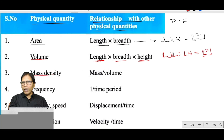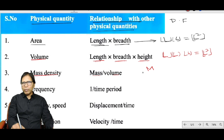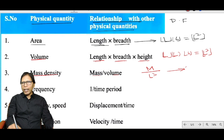Mass density equals mass divided by volume. The dimension of mass is M and the dimension of volume is L³. Therefore, the dimensional formula of density is ML⁻³.